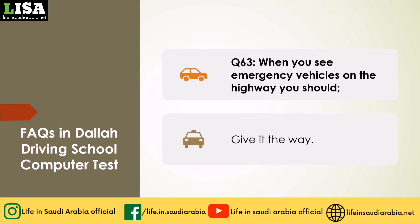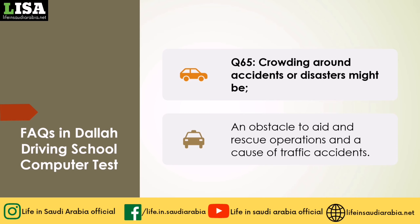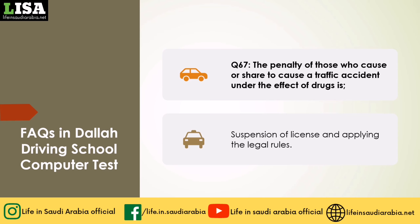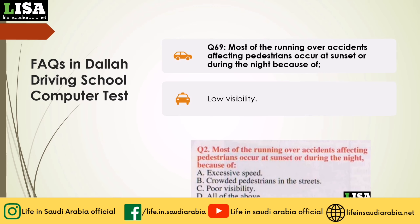Q63: When you see emergency vehicles on the highway, you should? Answer: Give it the way. Q64: To stop external bleeding for accident injured, you can do the following. Answer: Press the place of bleeding hard. Q65: Crowding around accidents or disasters might be? Answer: An obstacle to aid and rescue operations and a cause of traffic accidents. Q66: If you are the first person to reach the accident site, you should? Answer: Stop your vehicle outside the road after passing the accident site. Q67: The penalty of those who cause a traffic accident under the effect of drugs is? Answer: Suspension of license and applying the legal rules.